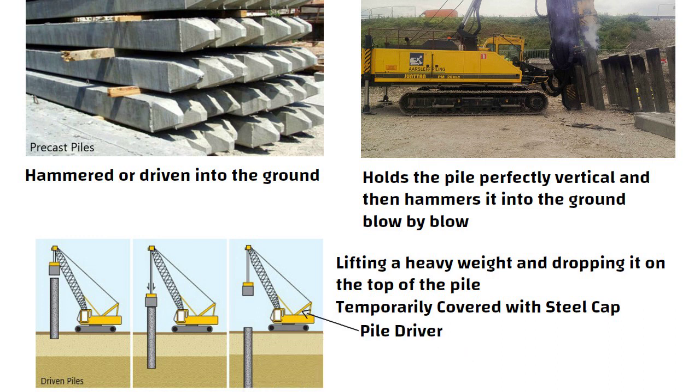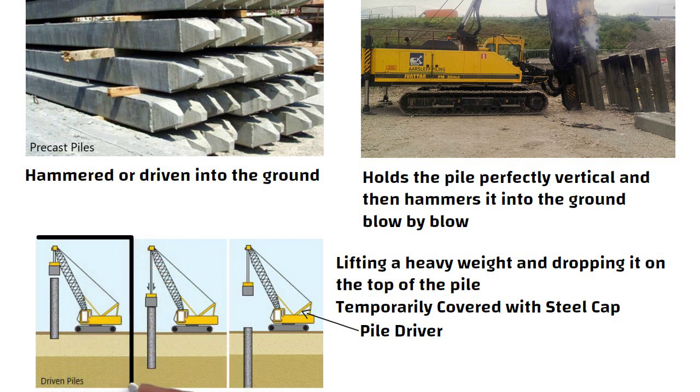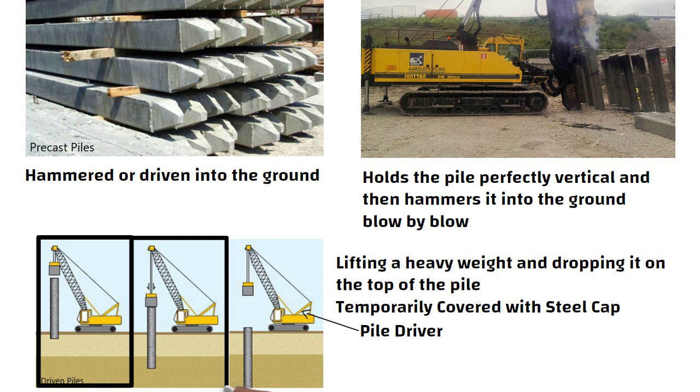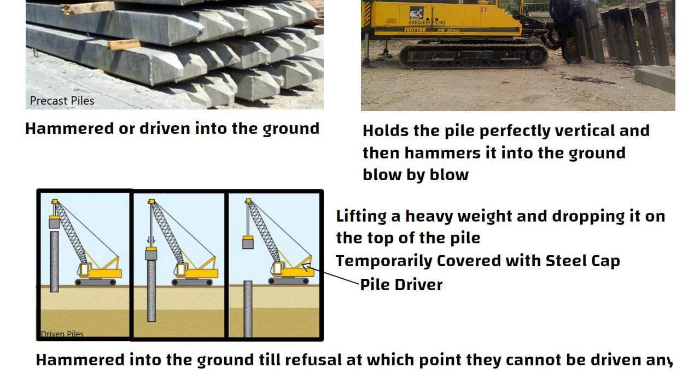The pile driver thus performs two functions. First, it acts as a crane and lifts the pile from horizontal position on the ground and rotates it into the correct vertical position. And second, it hammers the pile down into the ground. Piles should be hammered into the ground till refusal, at which point they cannot be driven any further into the soil.